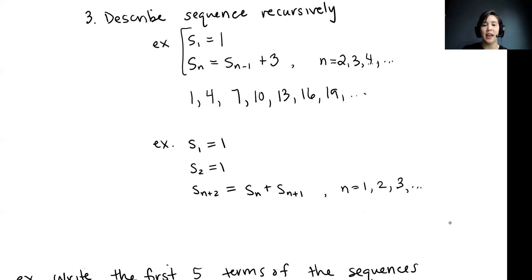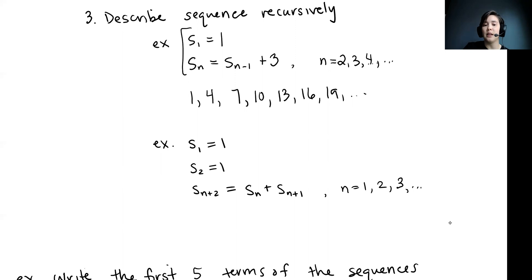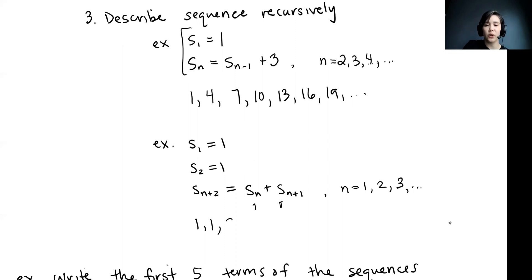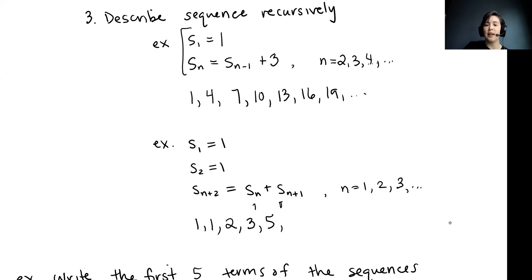Here is one more example of a recursively defined sequence. In this one I give you the first two terms: S1 is 1 and S2 is also 1. The general rule is that to get the term Sn+2, we take the sum of the previous two terms. So the sequence starts with 1 and 1. The third term is 1 plus 1 equals 2, the fourth is 1 plus 2 equals 3, the fifth is 2 plus 3 equals 5, and we just keep adding the two previous terms to get the next one.